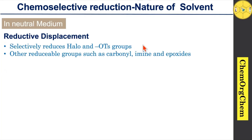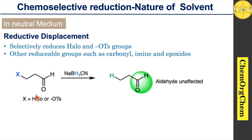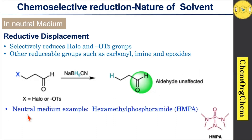In reductive displacement, sodium cyanoborohydride selectively reduces halide or tosylate groups. However, if the same framework contains carbonyl, imine, and epoxide groups, those groups are unaffected by this reagent. Here you see one example: this compound contains both an aldehyde group as well as halide or tosylate groups. When you use sodium cyanoborohydride, it selectively reduces the halide or tosylate groups, and you get the corresponding compound with the aldehyde unaffected.